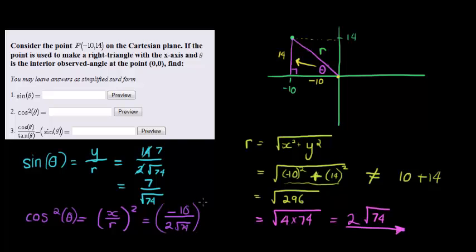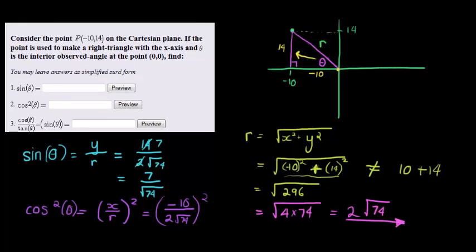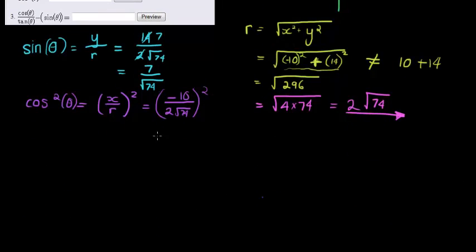Let's first simplify. That becomes negative 5 over square root of 74, and that must be squared. Negative 5 times negative 5 is 25, so it's a positive number. Square root of 74 squared is just 74. So we get 25 over 74.